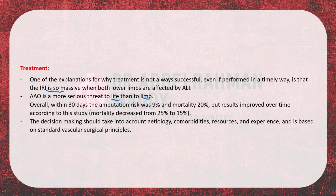Within 30 days, amputation risk was 9% and mortality was 20% in one study, confirming it as a major threat to life. However, results improved over time: mortality decreased from 25% to 15%, due to improvements in managing ischemia-reperfusion injury. Decision-making should take into account etiology, comorbidities, resources, and experience, based on standard vascular and surgical principles.